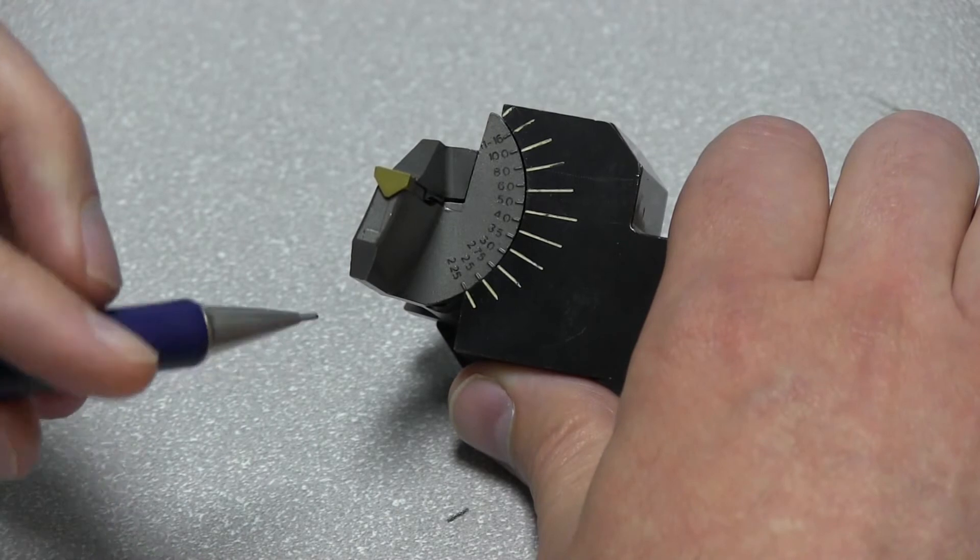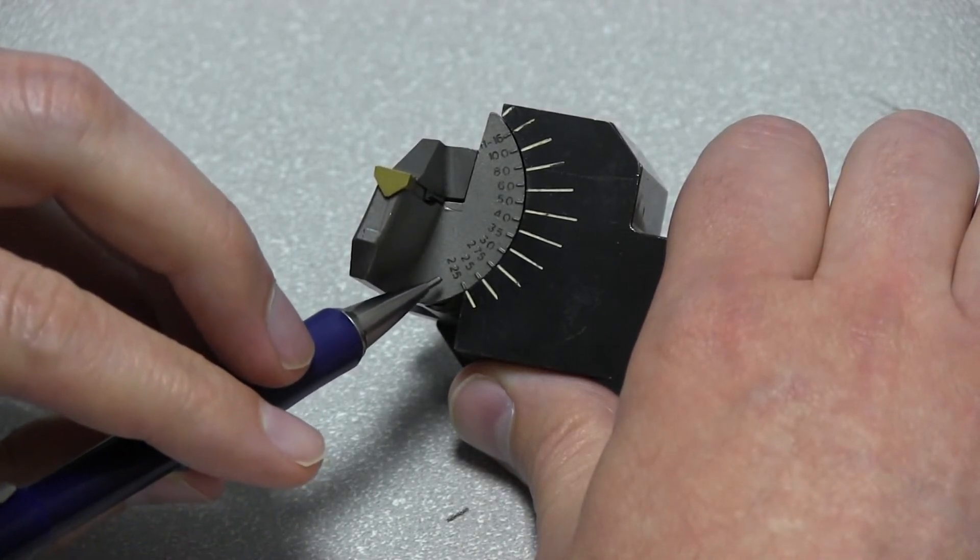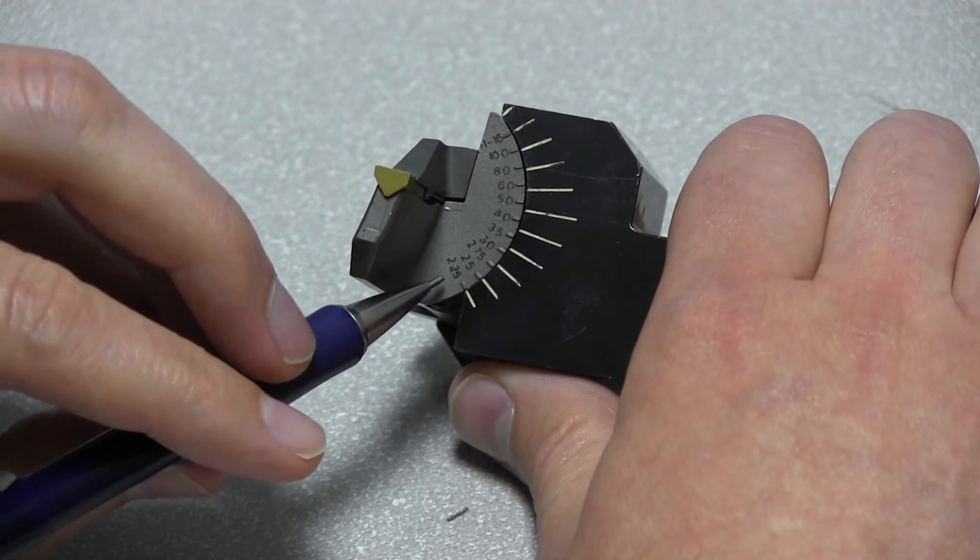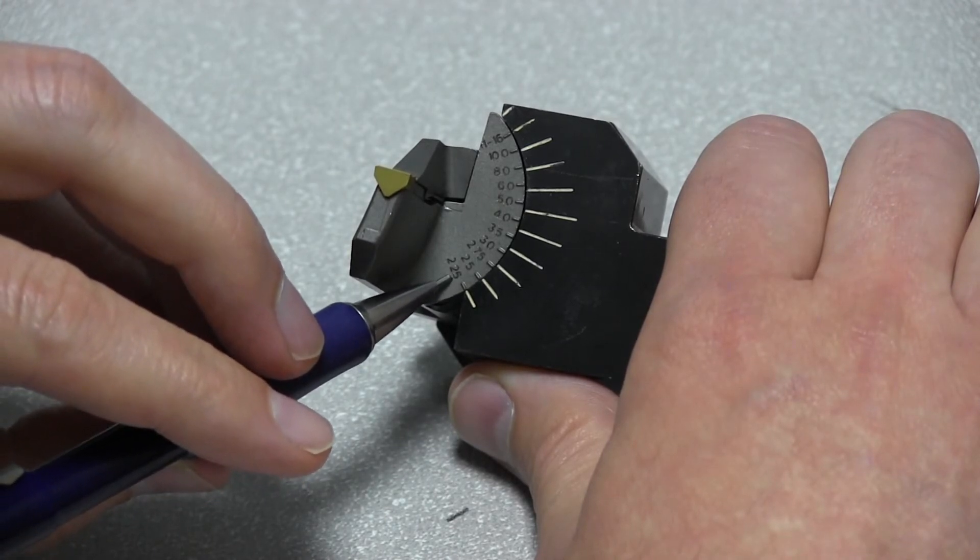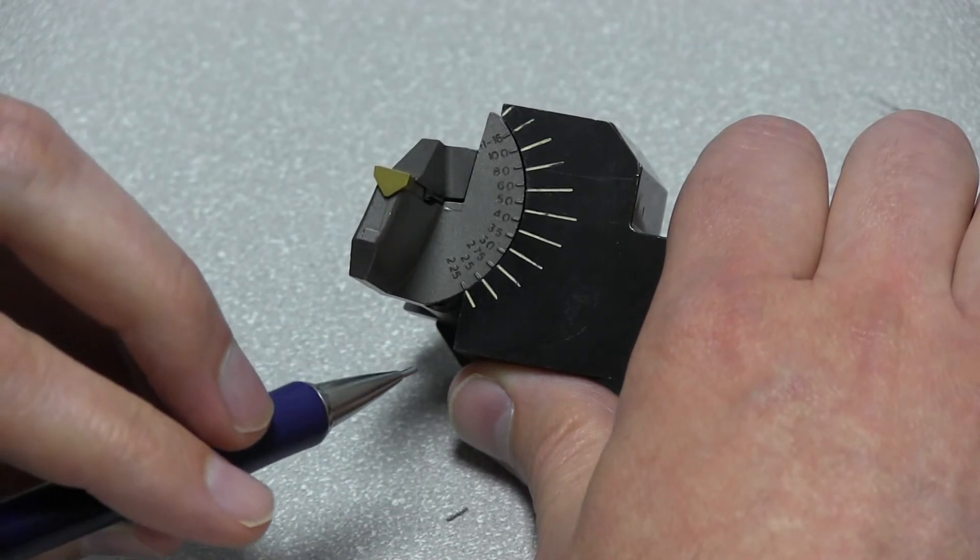So if you have a 2 1/4 inch diameter face groove, major diameter or OD diameter, you're going to set this tool to 2.25, this line on the cartridge with the bottom line on the tool holder.